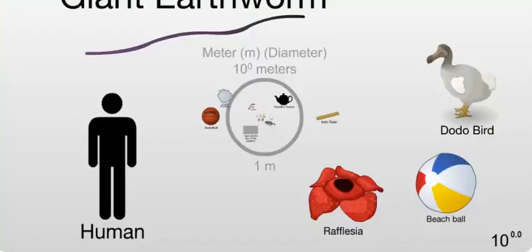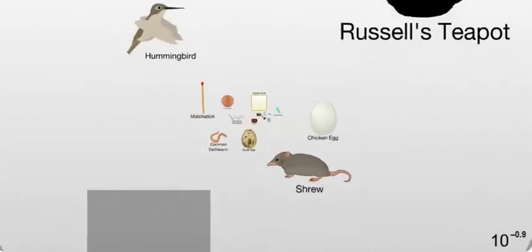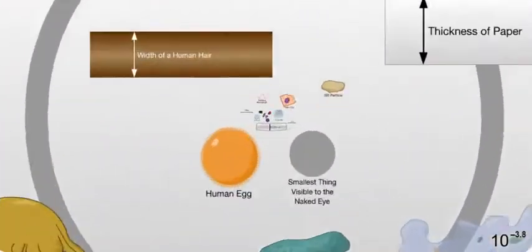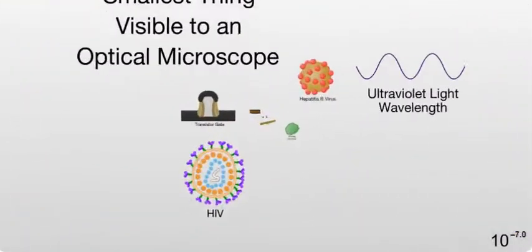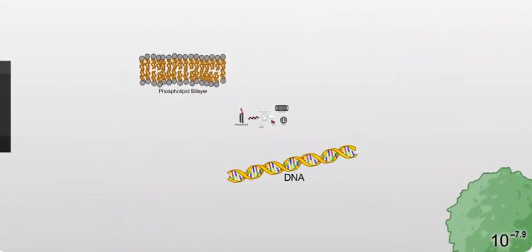How small are polymers? Polymers are smaller than ants. They're even smaller than the width of a human hair. They're tinier than cells. Now we're at DNA, a biopolymer, or a polymer found in living things.